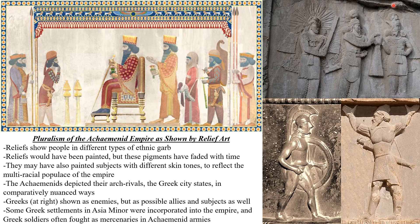The Achaemenids also depicted Greeks — their arch rivals — in their art, not always as enemies, but actually in surprisingly nuanced ways. In some cases, they depicted Greek soldiers called hoplites as possible allies. This is probably because many Greek soldiers served as mercenaries in the Achaemenid armies. There were also ethnically Greek conquered peoples from Anatolia in Asia Minor in the Achaemenid Empire as well.